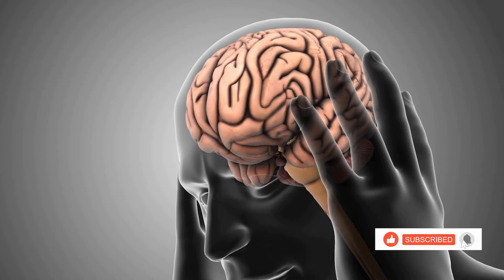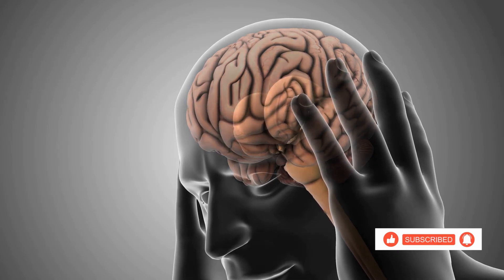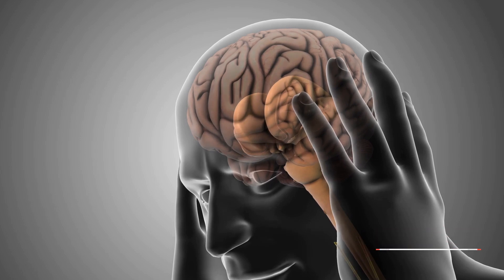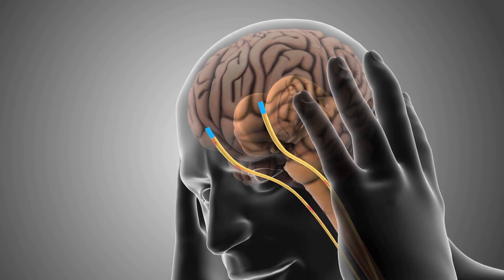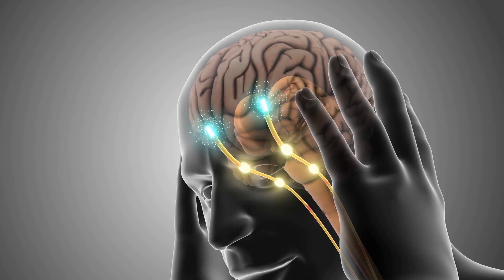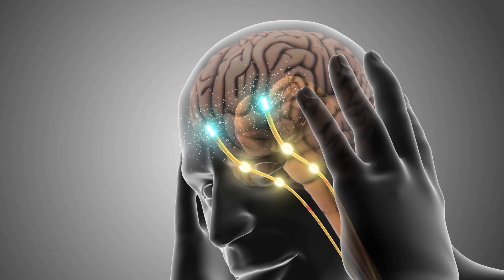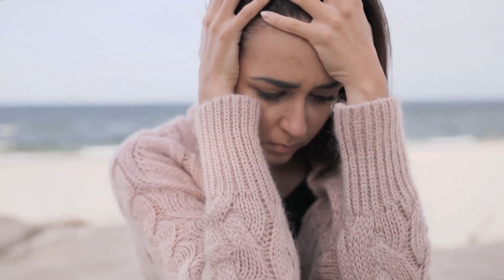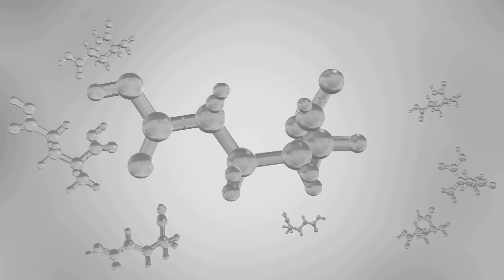Moving on, let's meet serotonin, the brain's peacekeeper. It helps regulate mood, sleep, and even digestion. Imagine it as a calming lullaby, bringing tranquility to the mind. However, when serotonin levels drop, it can lead to conditions like depression and anxiety.